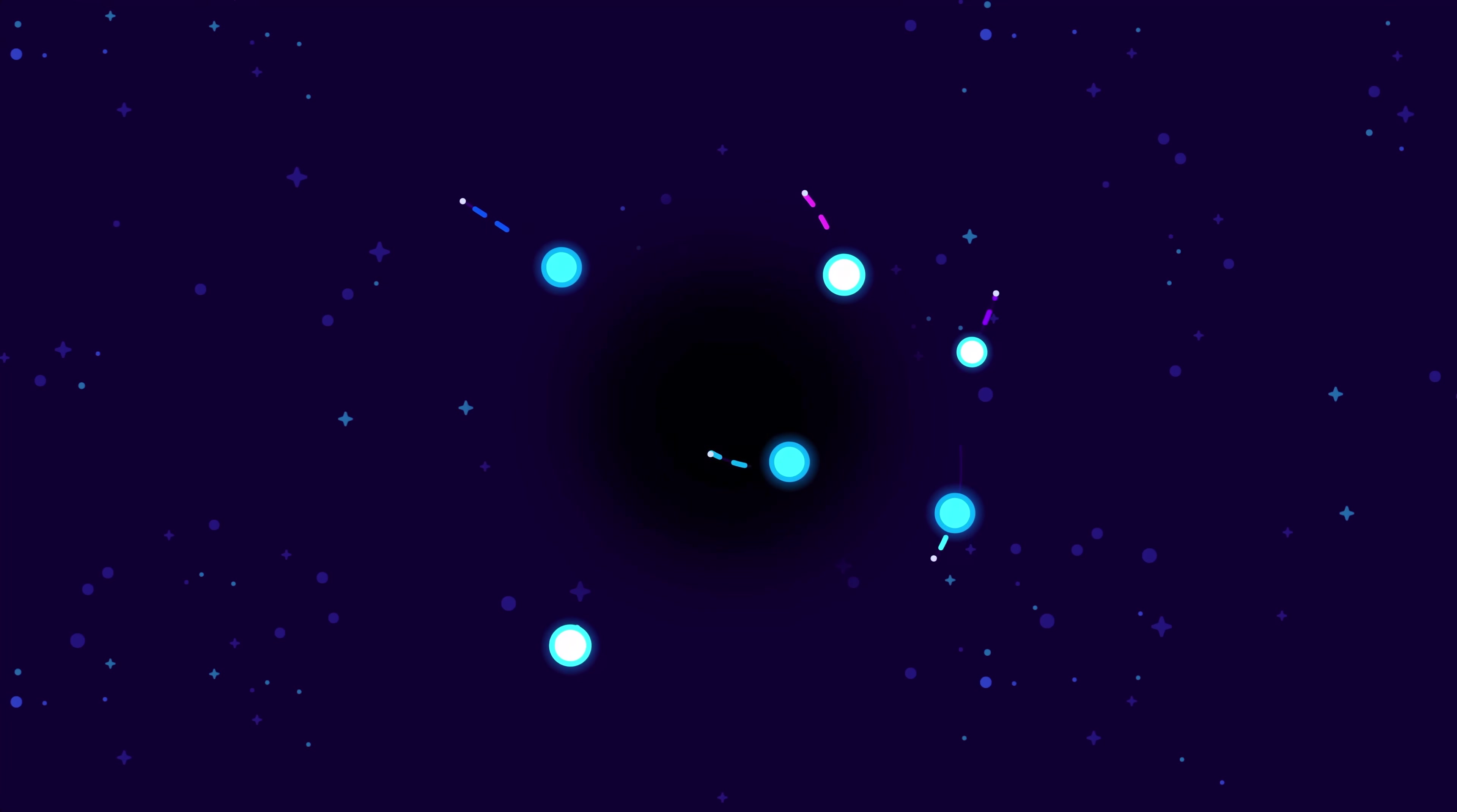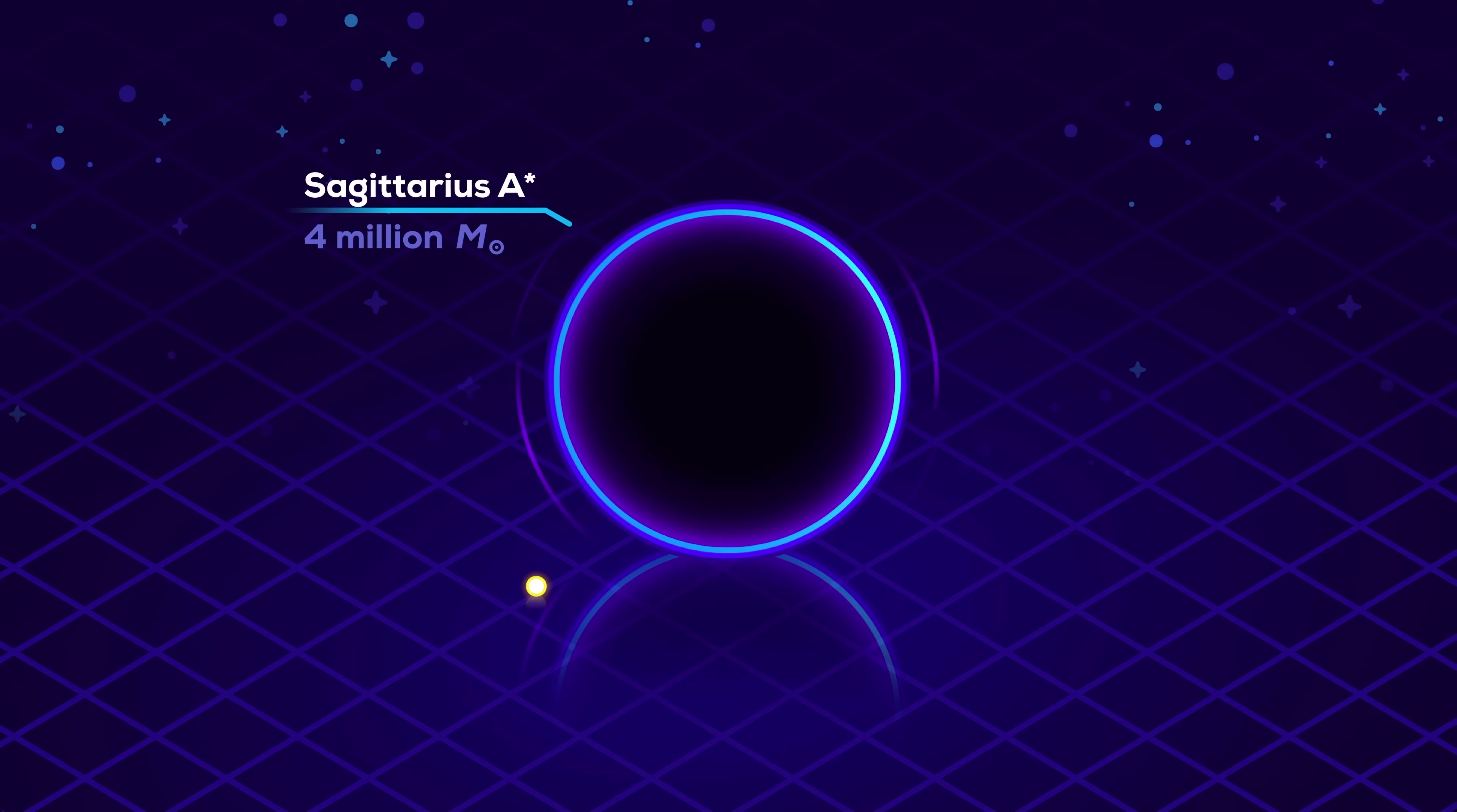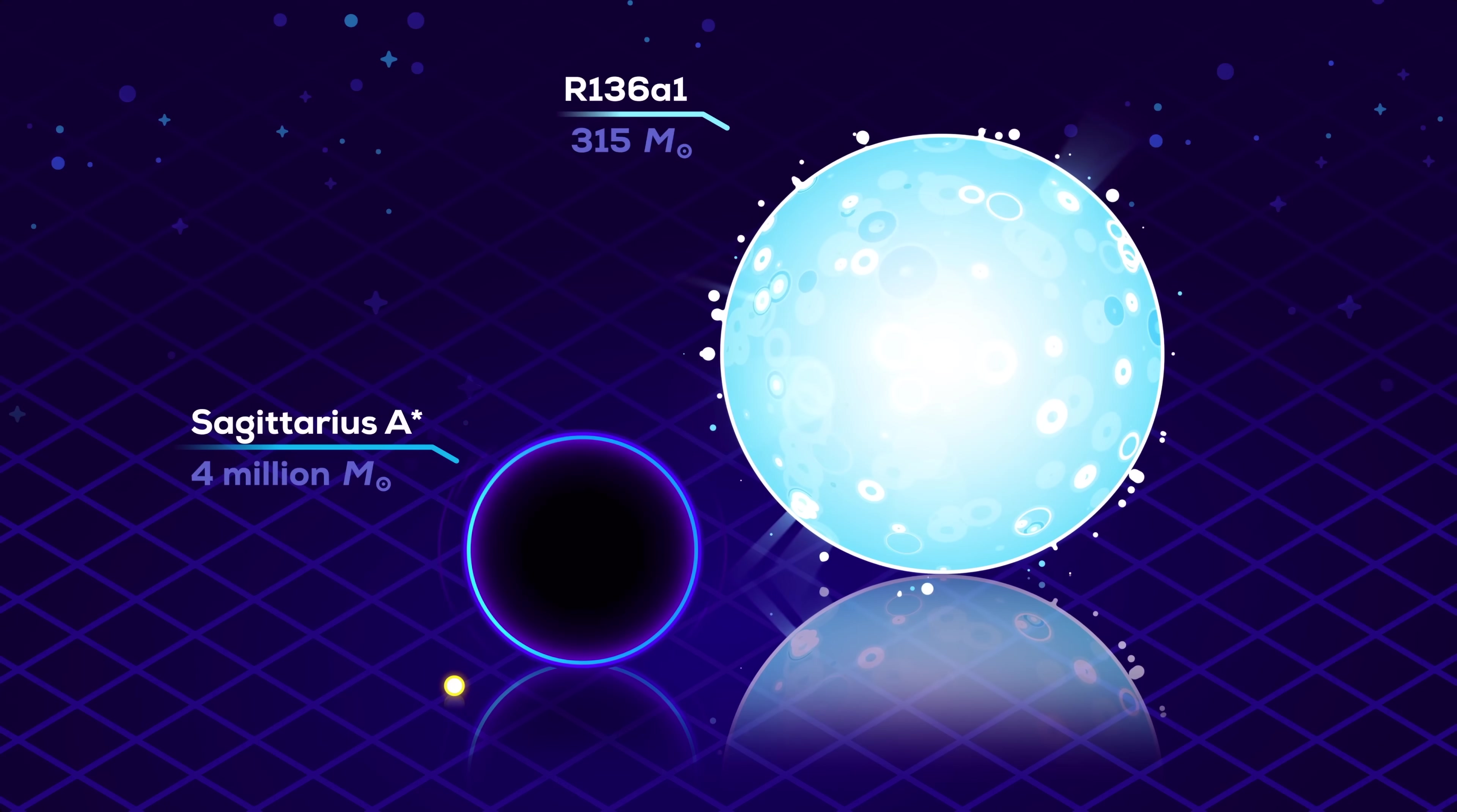We know it sits there because we can see a number of stars being thrown around by a seemingly empty spot. And despite its incredible mass, its radius is still only 17 times our sun. Smaller than most giant stars, but millions of times more massive.